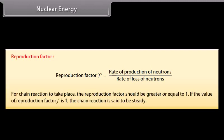Reproduction factor: It is defined as the ratio of rate of production of neutrons to the rate of loss of neutrons. For chain reaction to take place, the reproduction factor should be greater or equal to 1. If the value of reproduction factor is 1, the chain reaction is said to be steady.